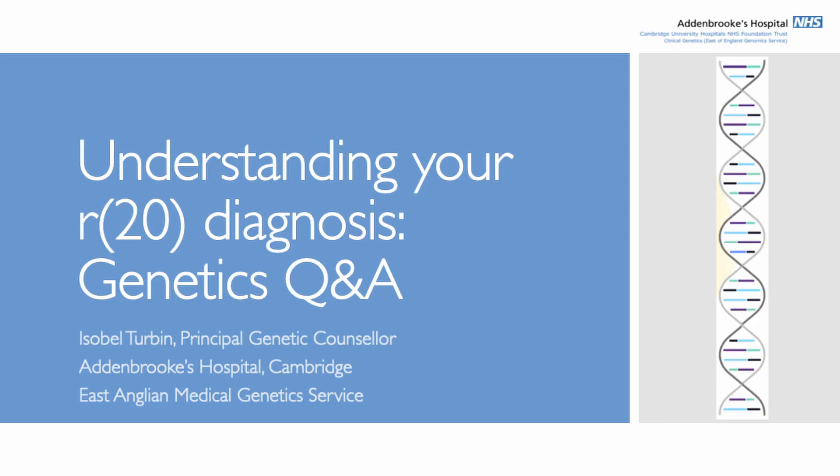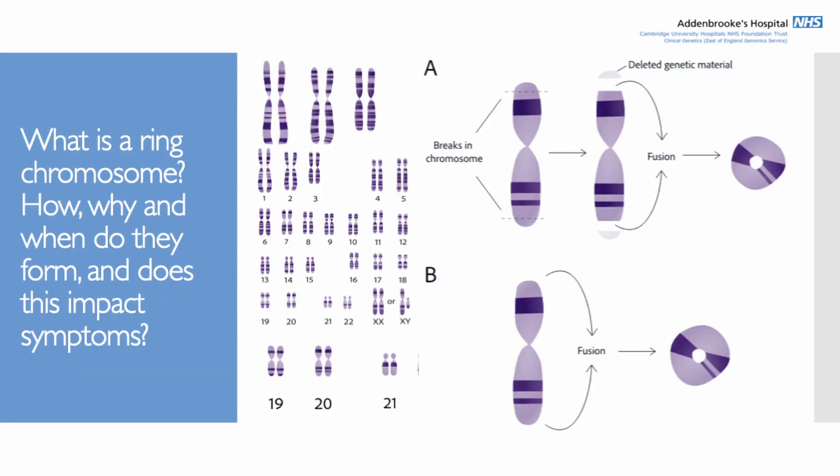Thank you to those of you that sent in questions beforehand — that was really helpful to focus what I'd talk through today. I'll try and keep it as brief as I can and take any other questions at the end. My name is Isabel Turbin; I'm one of the principal genetic counsellors at Addenbrooke's Hospital in the clinical genetic service, which is part of the East Anglian Medical Genetics Service.